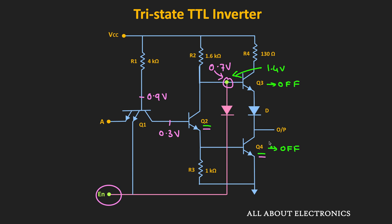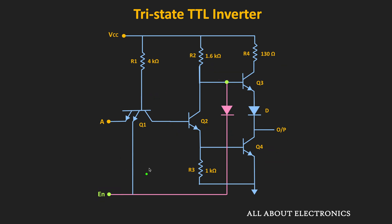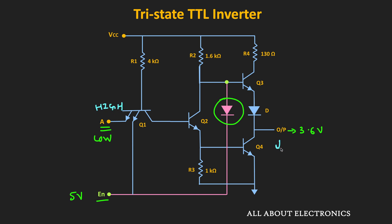When the enable input is high, the output depends on the A input. The diode at Q3's base gets reverse biased since the cathode is now close to 5V, so it turns OFF, and the circuit works as a normal inverter. When A input is low, the output is logic high at close to 3.6V. When A input is high, the output is logic low at close to 0.2V. This is how the circuit works as a tri-state inverter.